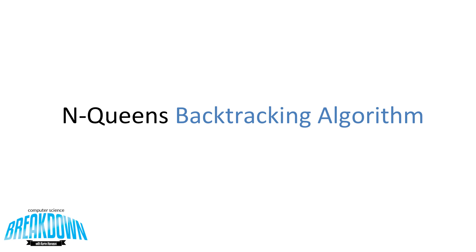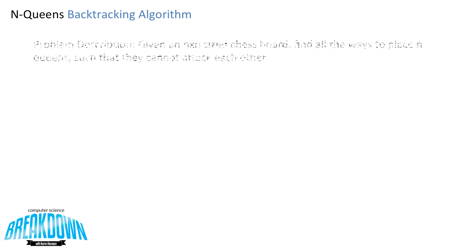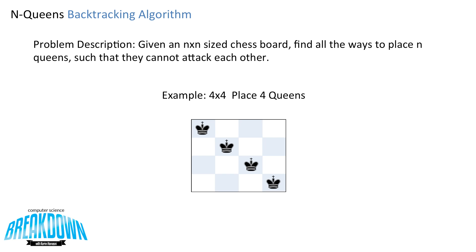Today we're going to look at the N Queens backtracking algorithm problem. Let's define the problem first. Given an N by N size chessboard, we want to find all the ways to place N Queens such that they cannot attack each other. Let's look at an example with a 4x4 board where we want to place 4 Queens. If we place 4 Queens along a diagonal, they can all attack each other, so none of these Queens are safe — it's not a solution to our problem.